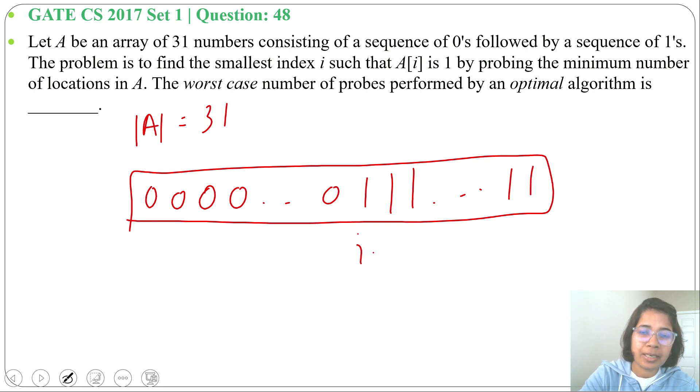Every time we will find left index plus right index divided by 2, that will be our middle element and that will compare. Is it 1? If it is 0 then we will search in the right side. If it is 1 then we will search in the left side. And here it is written the worst case number of probes.